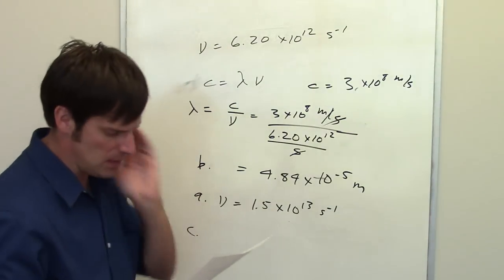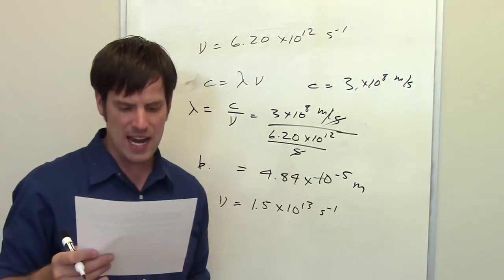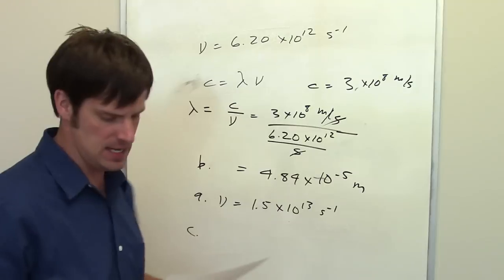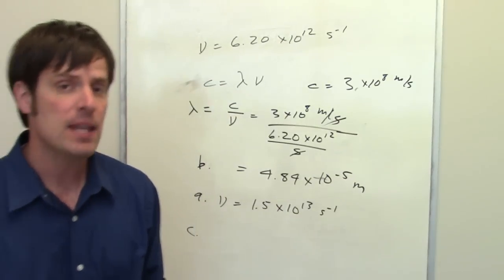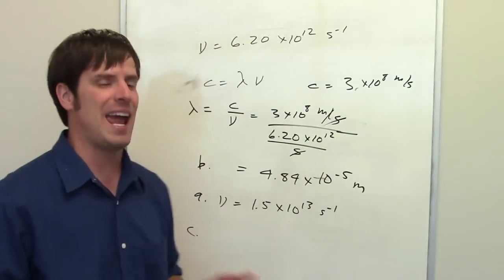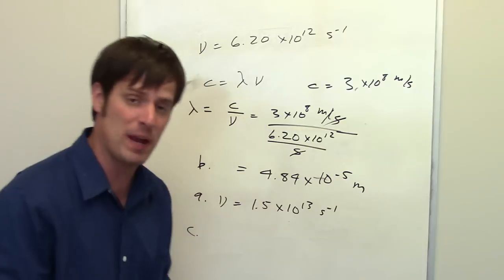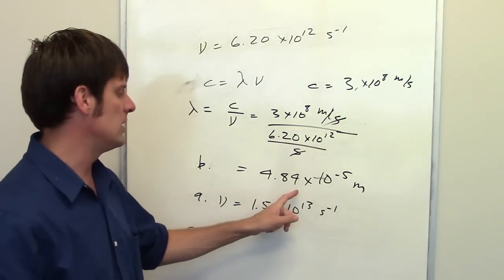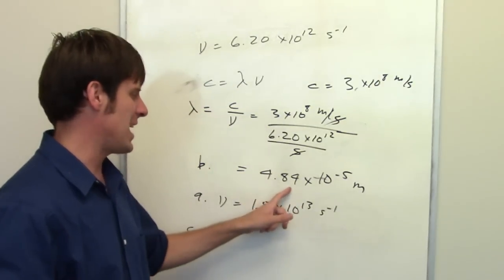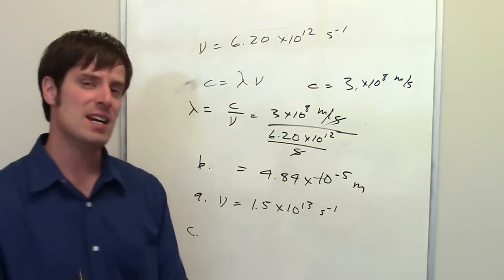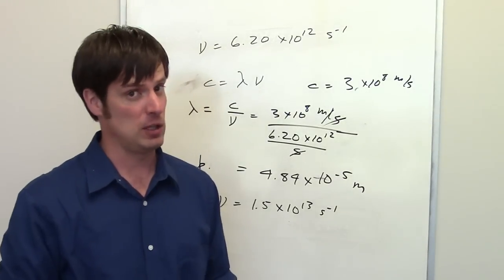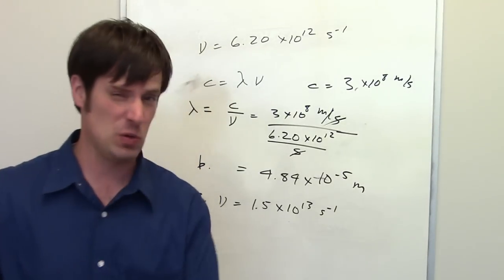And question C from this problem set asks us, would the radiations in parts A and B be visible to the human eye? In order to determine that, you need to look at the figure of the electromagnetic or EM spectrum and determine if a form of EM radiation having this wavelength or this frequency lies in that narrow band of visible light. I'll let you do that on your own.